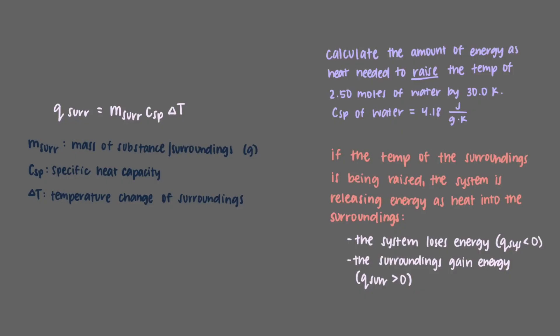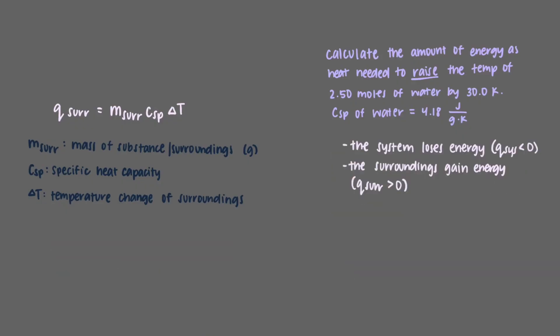Now let's calculate the amount of energy we would need as heat. How much energy do we need? We are given the amount of water in moles, so we must convert it to grams first by using the molar mass. 2.50 moles of water is 45.04 grams of water.